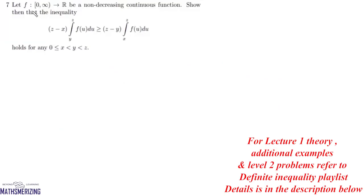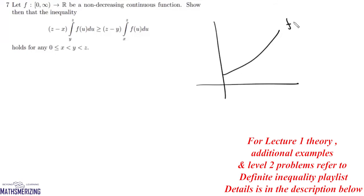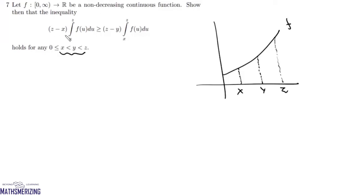Question number 7: let f from [0, ∞) to ℝ be a non-decreasing continuous function. In the region where 0 ≤ x < y < z, we have three points x, y, and z. We need to prove the inequality: (z − x) ∫[y to z] f(u) du ≥ (z − y) ∫[x to z] f(u) du.